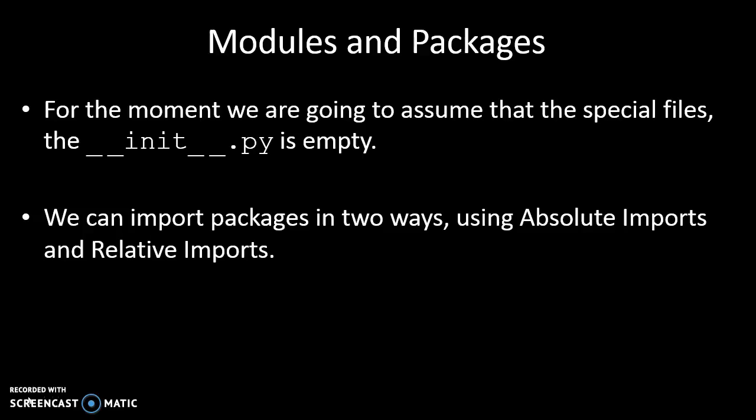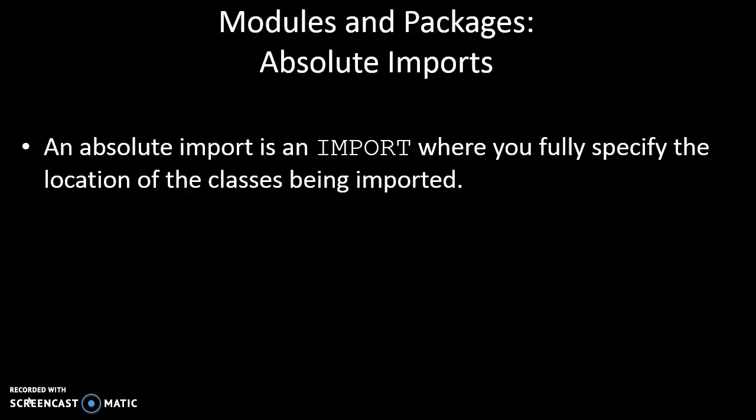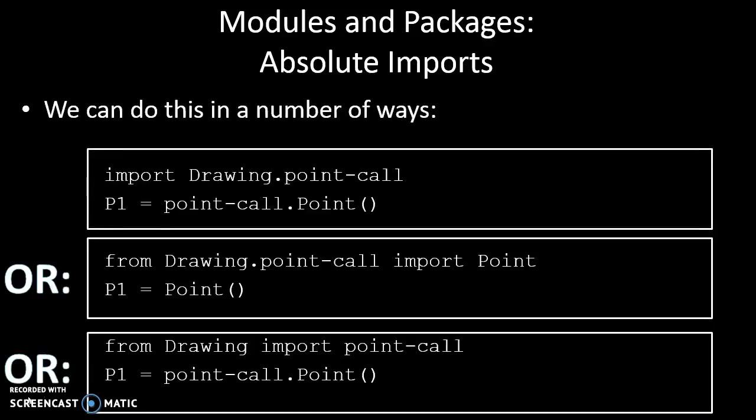In terms of how we import packages, there's two ways. One is absolute imports, which we've kind of seen already, and then the other is relative. So an absolute import is where you fully specify the location of the class being imported. So if in the Drawing folder I have a file called point-call and I want to get that whole file imported, then I can just say import Drawing.point-call, which is the folder or package Drawing. Give me the module or file point-call, and then I can declare an instance of point-call.Point().